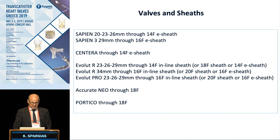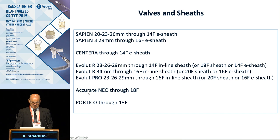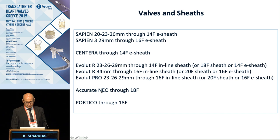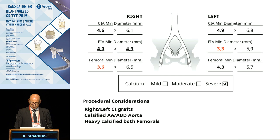Here is a breakdown of valves and sheaths: the Sapien 3 valve — three sizes use 14-French and the 29mm uses 16-French. The Centera is also coming to Greece, using 14-French. The Evolut valves use the inline sheath, or alternatively an 18-French sheath or 14-French E-sheath depending on size. The Accurate Neo requires an 18-French sheath, like the Portico valve. The largest Portico device needs 19-French, unless going sheathless, which gives an 18-French real outer diameter. For the Accurate, the 14-French E-sheath has started to be used, which really reduces the profile.